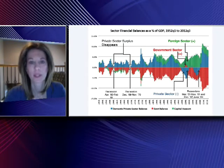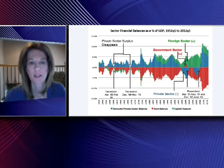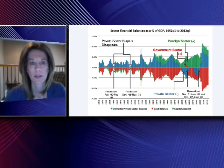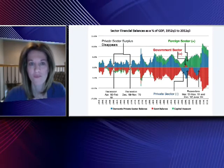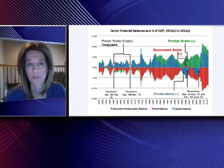These three sectors are in balance, and it looks like whenever our government manages to balance its budget, the private sector surplus collapses and we have a recession. This seems counterintuitive — can you explain this?